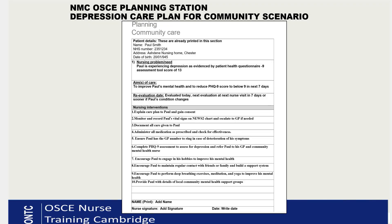Maintaining contact with family and friends provides a good support system and helps improve the patient's mental health. Also: encourage Paul to perform deep breathing exercises, meditation, and yoga to improve his mental health; and provide Paul with details of local community mental health support groups he can join if he wishes. Finally, don't forget to print your name, sign, and add the date at the end.